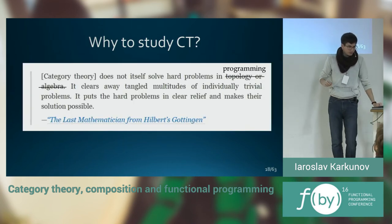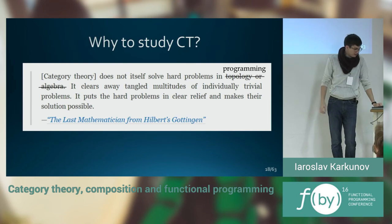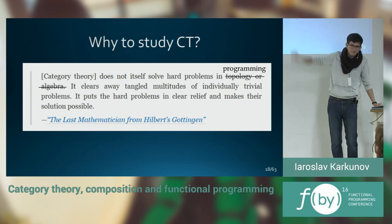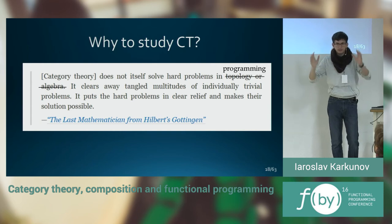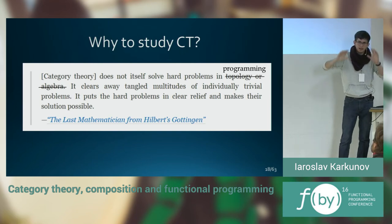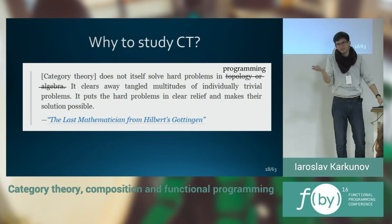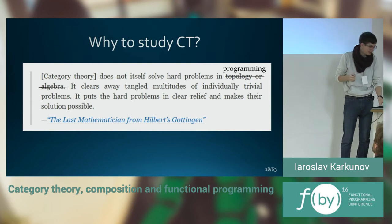I want to show you this quote from one of the articles I read. I crossed out topology and algebra and wrote programming there. Category theory makes very hard and entangled problems very simple ones. It just abstracts all the mess around the problem and throws it away. So you can see clearly the essence of the problem and in many times you could solve very hard problems simply. That's the main reason, I guess, why we need to start that.